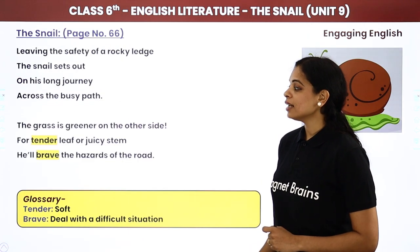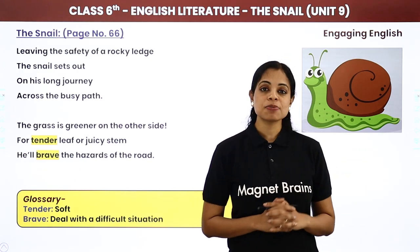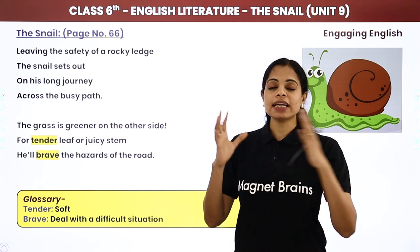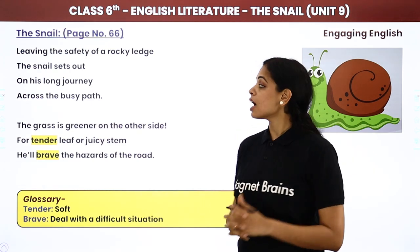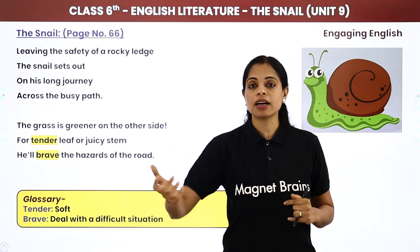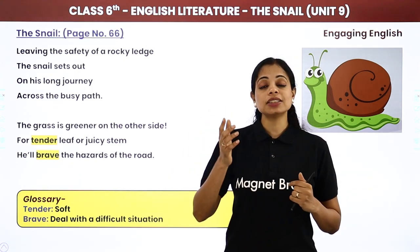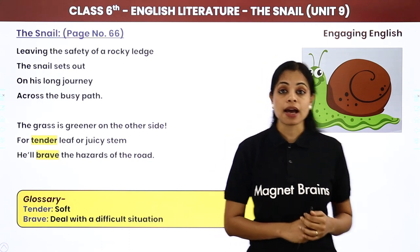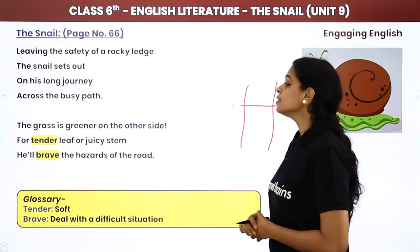Ab yeh joh humari poem hai, is poem ko hum stanza by stanza samjhenge, line by line explanation samjhenge. 'Leaving the safety of a rocky ledge' — ab snails usually pattharon ke niche, joh soft mitti hoti hai, wahan paaye jaate hain. So us area ko apni ek aisi jagah, jahan pe woh bohut safe hain, jahan koi usko hurt nahi kar sakta — us area ko chhodke, the snail sets out on his long journey. Now why are we calling it a long journey? Agar mujhe do step jaana ho, it is like a second ka kaam for me. Lekin the same distance, when it is supposed to be travelled by the snail, it is a long journey kyunki snail bohut slow chalta hai. So snail apni lambi si journey ke liye bahar nikalta hai across the busy path. If it is a busy path, usko poora cross karke doosri taraf jaana hai.